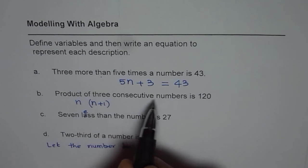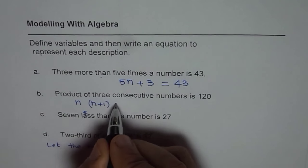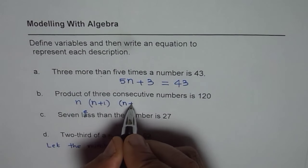Product of 3 consecutive numbers. So we need 3 numbers: n, n plus 1, next will be n plus 2.